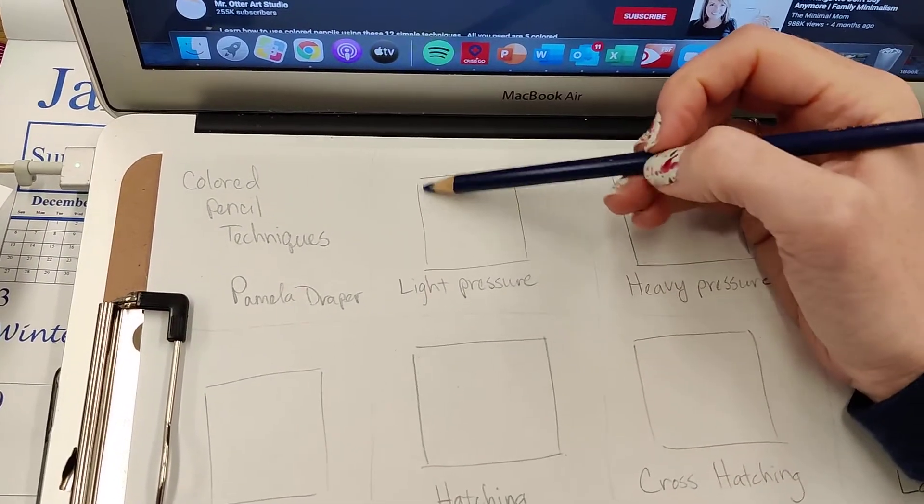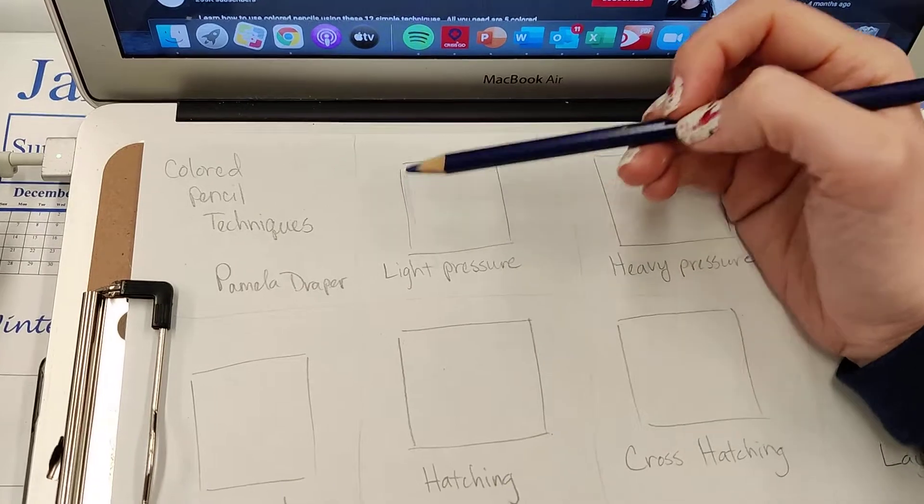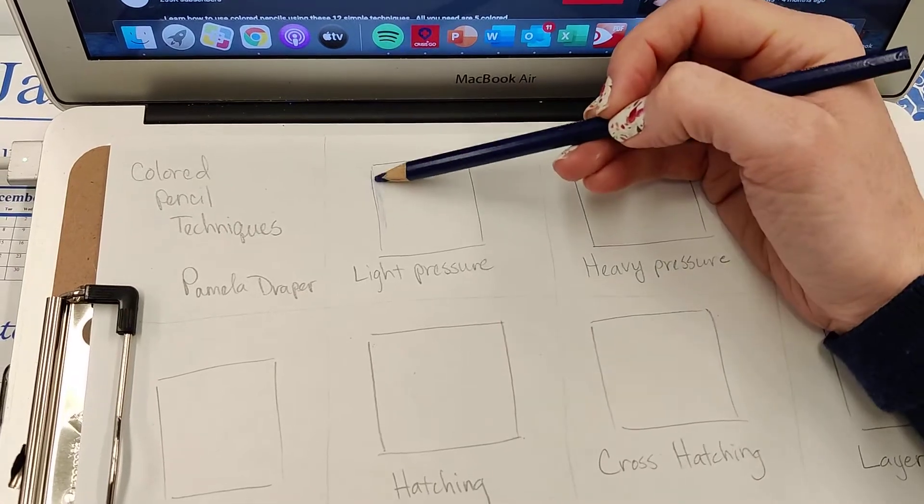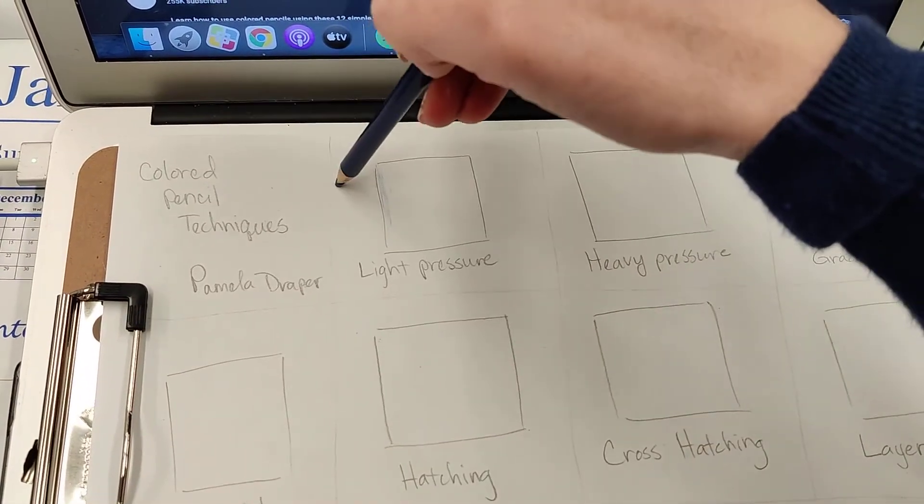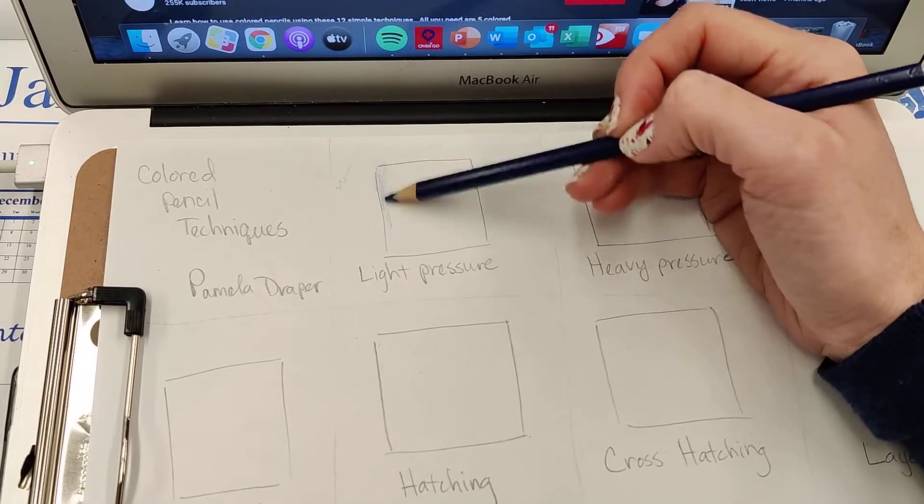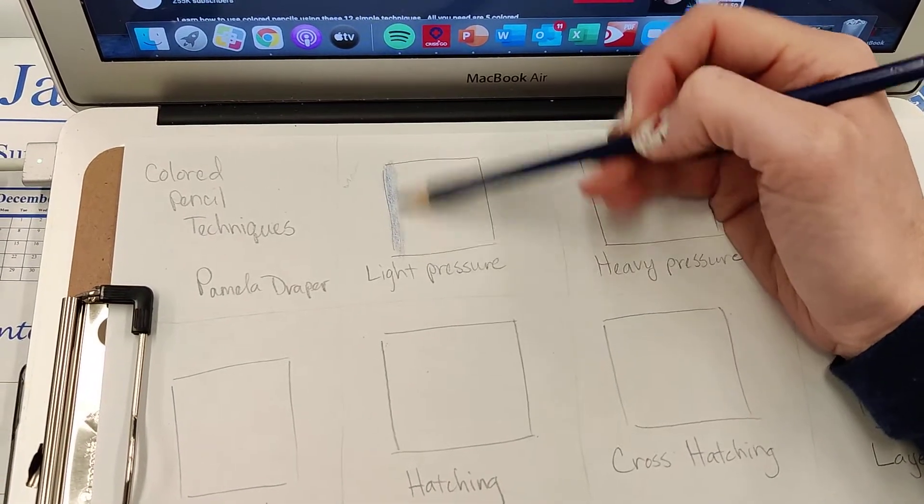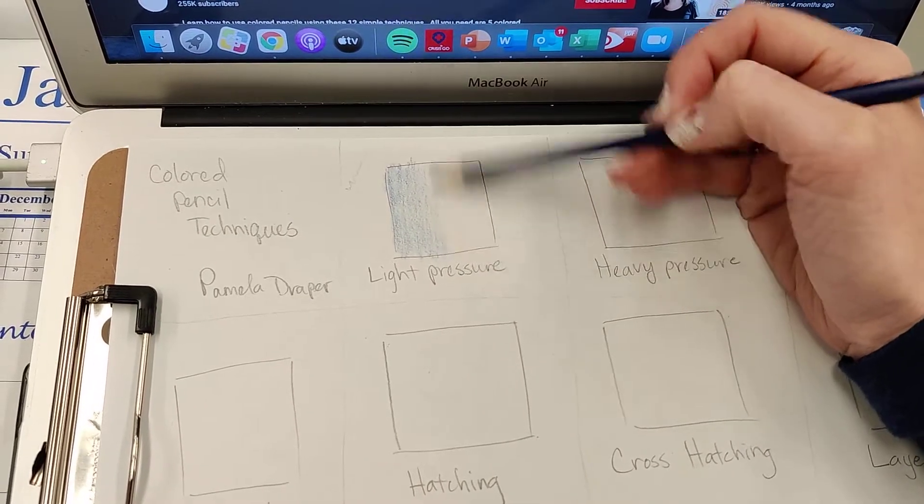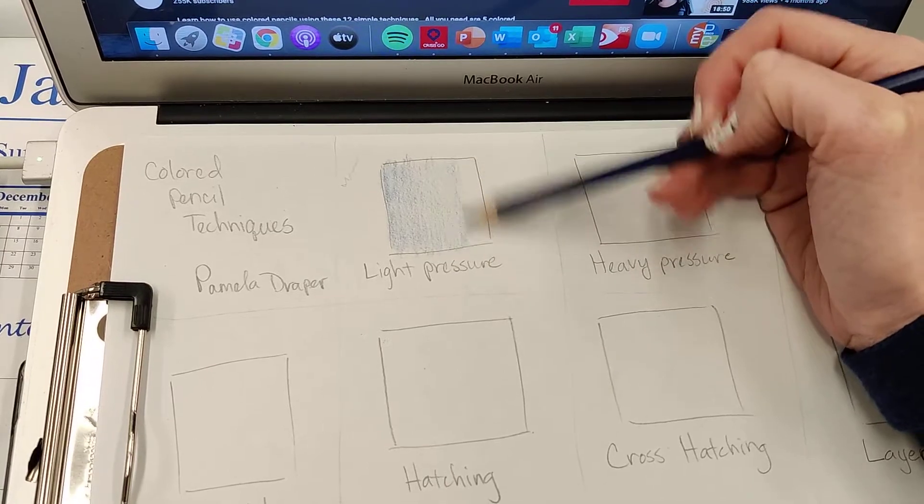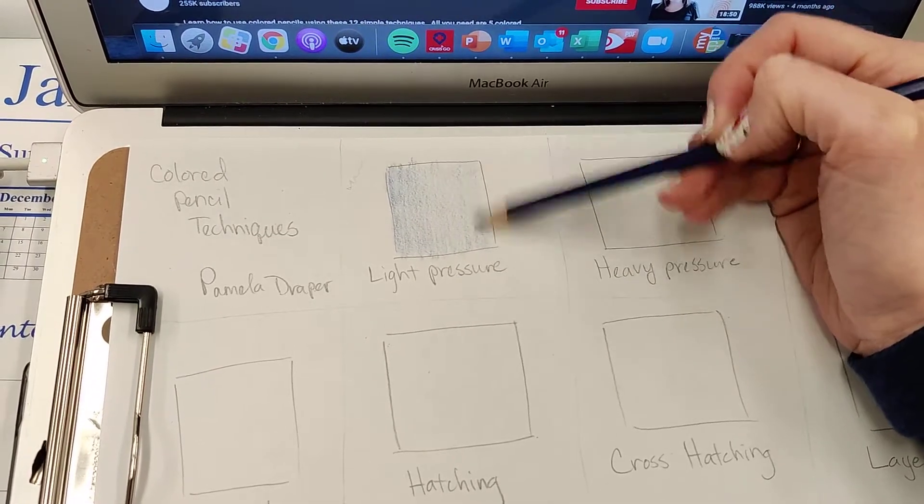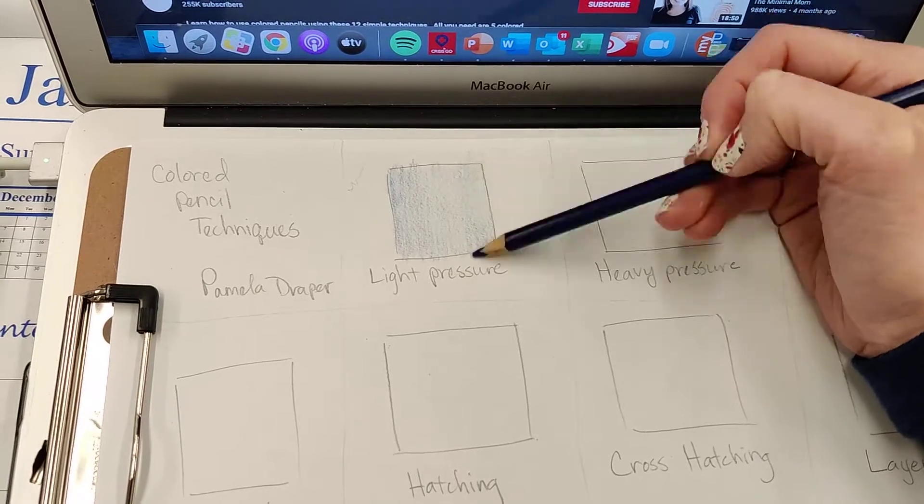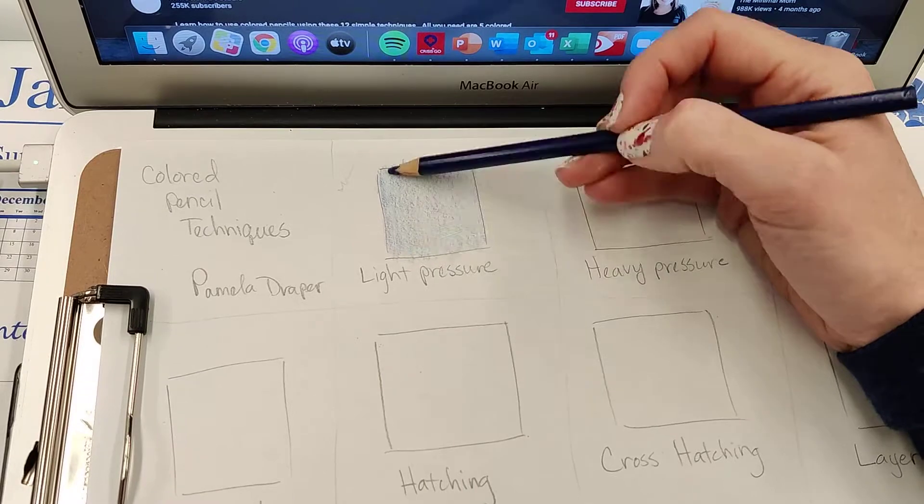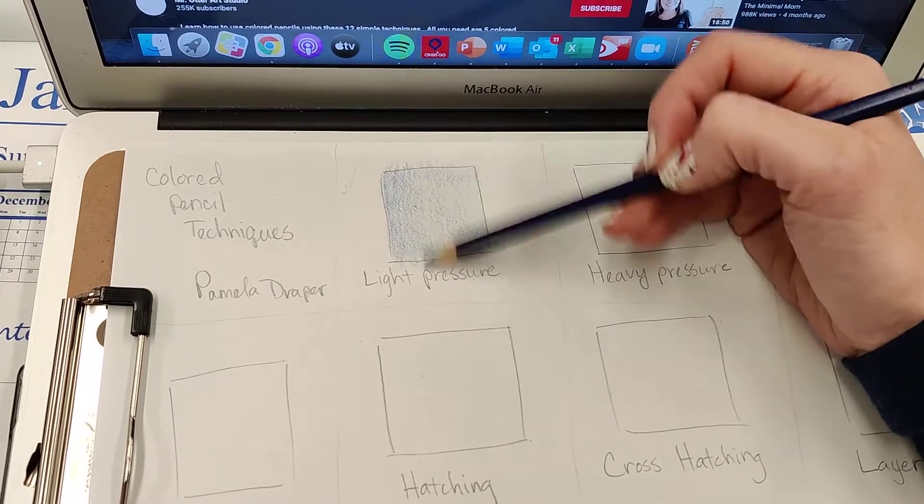So, the first one is light pressure. Look how I'm holding the pencil. I'm like halfway back. I'm also coloring on the side. I'm not holding this up like I was going to write my name. I'm coloring on the side of the pencil. This goes for all shading. It gives you more surface area to work on. Having to loosen your grip on the pencil makes you use lighter pressure. So you're just going to fill in that box evenly and lightly.